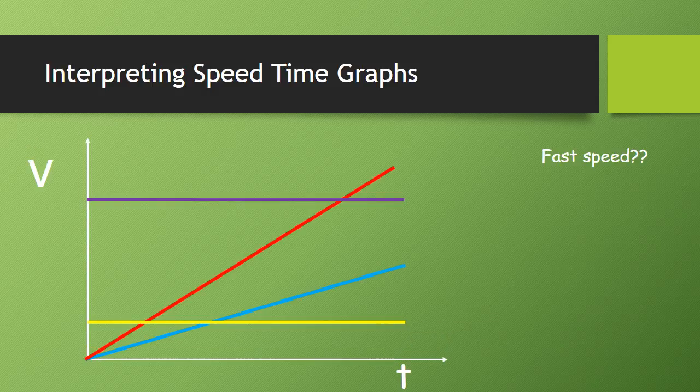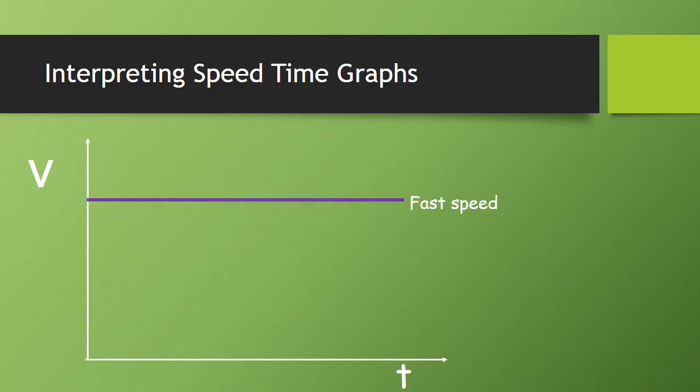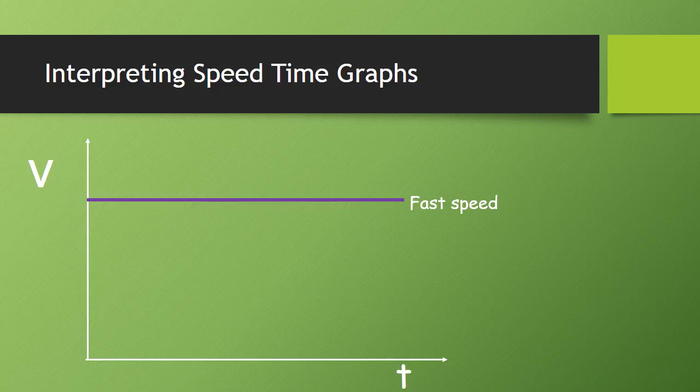A fast speed. The purple line shows a fast speed, it's horizontal meaning constant, and a long way up meaning fast.